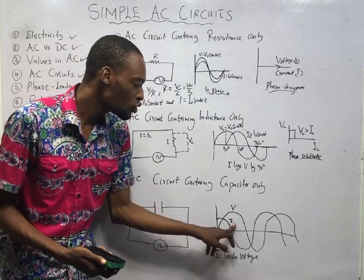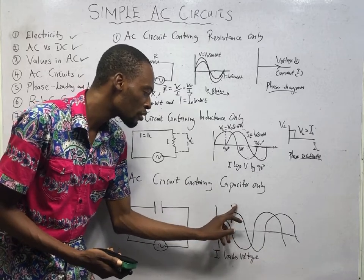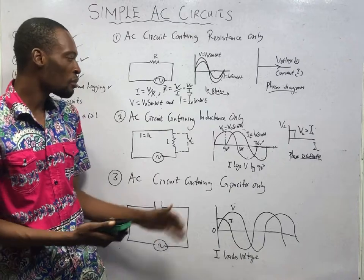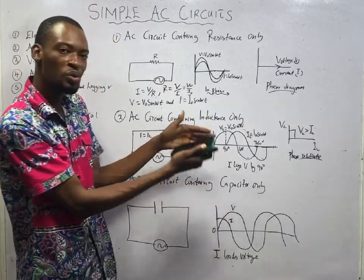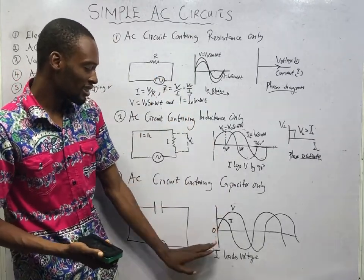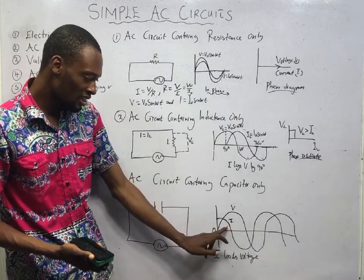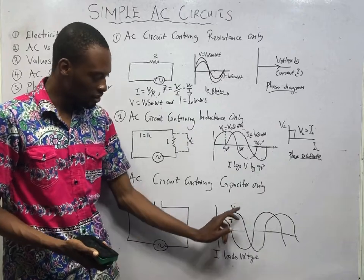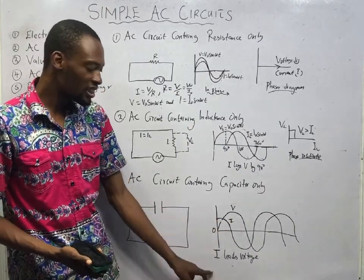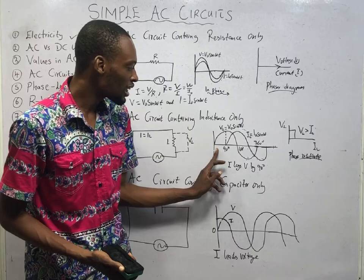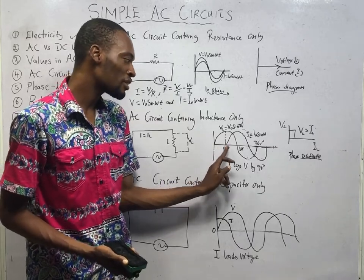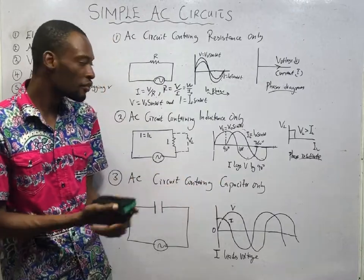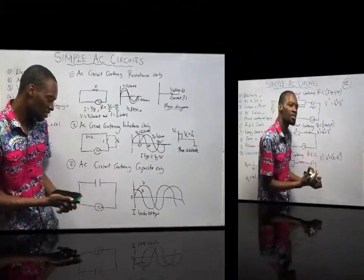For an AC circuit containing only inductance, the voltage starts first, then the current follows — the current lags the voltage by 90 degrees, or equivalently, the voltage leads the current by 90 degrees. For an AC circuit containing capacitance only, the current leads the voltage by 90 degrees, or the voltage lags behind the current.